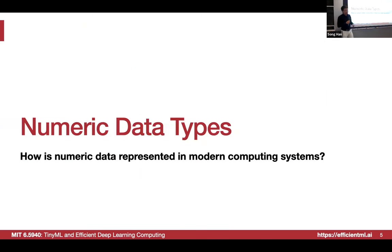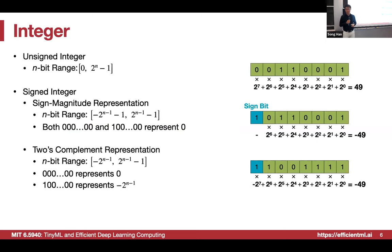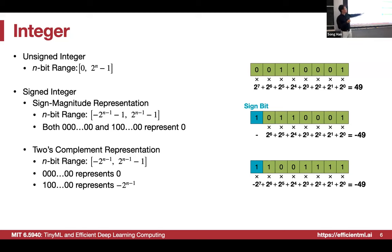Having established the motivation, let's jump into how we represent numbers. What are the popular representations? Integers, floating point, etc. Let's start with the simple case: integer representation, including unsigned integer, signed integer, and two's complement representation.